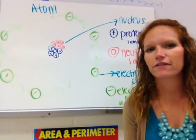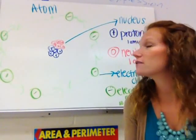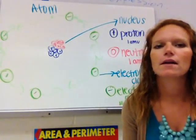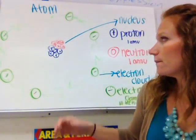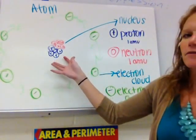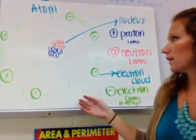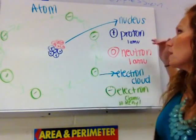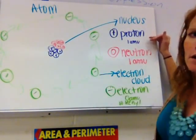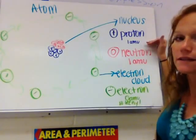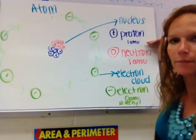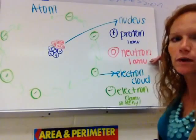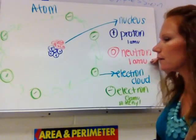The next video in our series of final review videos is going to be on the atom. The atom is made up of the nucleus and the electron cloud. In the nucleus, you have two different particles: the proton, which is worth one AMU — that means it has one atomic mass unit — and the neutron, which also has one atomic mass unit.